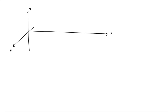Let's say we have an electric field oscillating parallel to the y-axis. This oscillation is sinusoidal — first oscillating in the positive y-direction, then in the negative y-direction, then in the positive y-direction, and on and on.